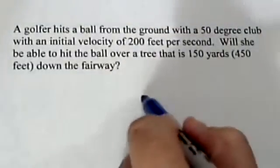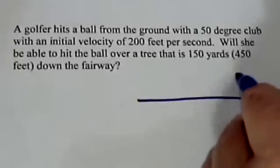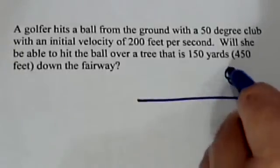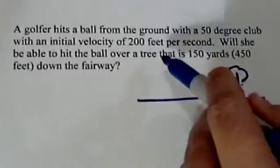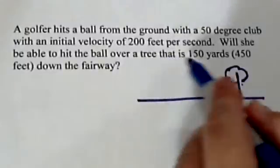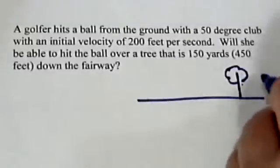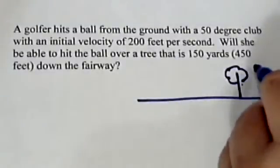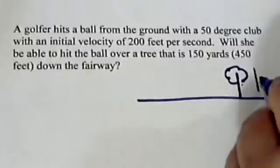Okay, so if we draw a quick sketch, we've got the golfer, we've got a tree. Let's see, the tree is 150 yards down, and let's also add that the tree is 35 feet tall.